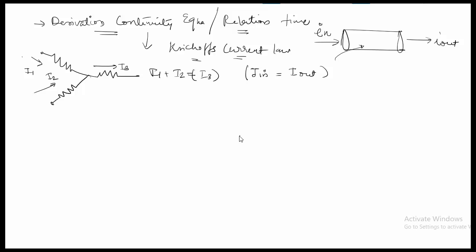If we place some charge at the interior of a conductor, it will disperse itself such that the charge is always equally distributed along the exterior surface. The quickness with which it can do that is determined by the relaxation time.